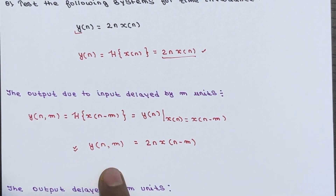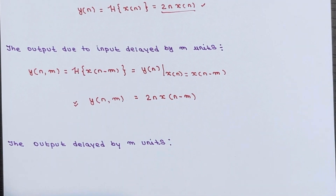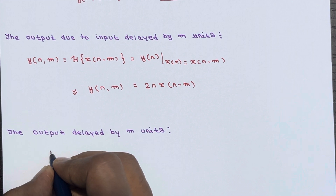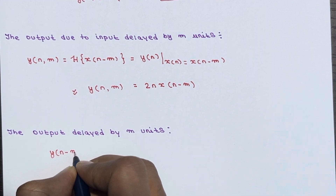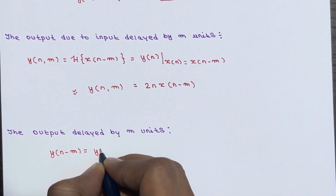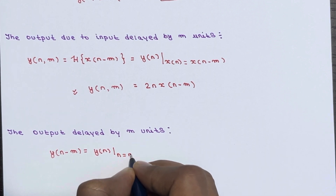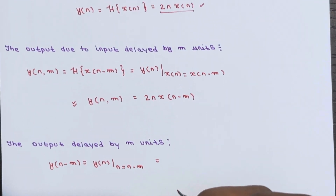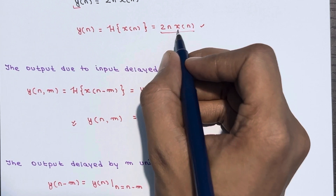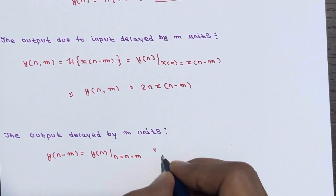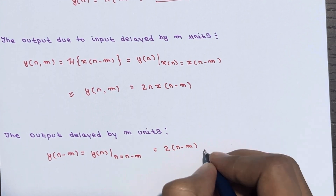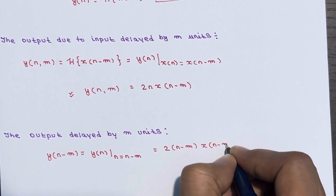Now calculate the output delayed by m units, which is y(n - m). To find this, take y(n) and replace every n with n - m. Looking at the equation, n appears in two places. So it becomes 2·(n - m)·x(n - m).